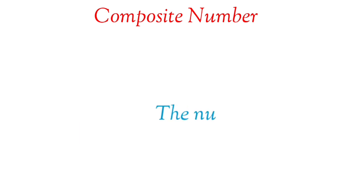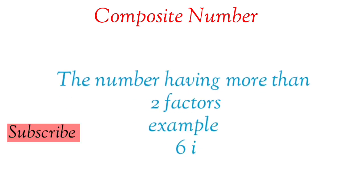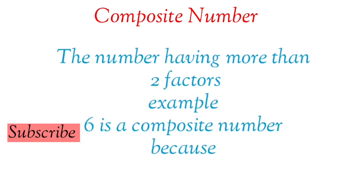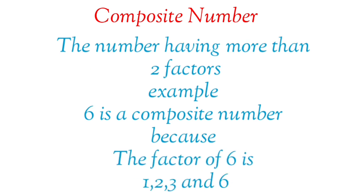Composite Number: The number having more than two factors. Example: 6 is a composite number because the factors of 6 are 1, 2, 3, and 6.